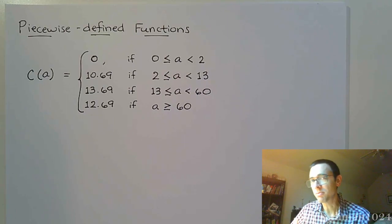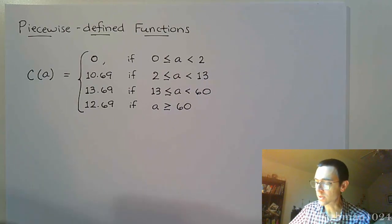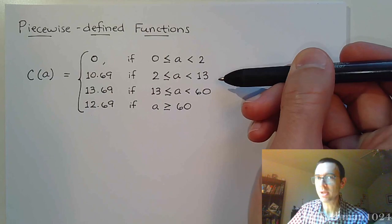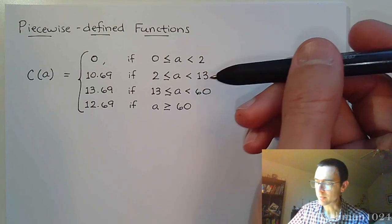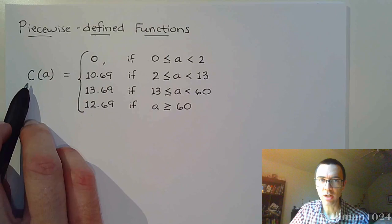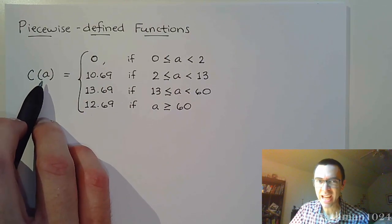They look kind of complicated because they're made up of a lot of different pieces. For example, here is an example of a piecewise-defined function. This function gives you the cost C based on the age of a person who's going to see a movie.